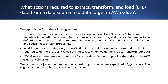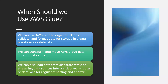We can run our job on demand or set it up to start when a specified trigger occurs. The trigger can be a time-based schedule or an event. When should we use AWS Glue? We can use AWS Glue to organize, clean, validate and format data for storage in a data warehouse or data lake. We can transform and move AWS cloud data into our data store, and load data from static or streaming data sources into our data warehouse or data lake for regular reporting and analysis.